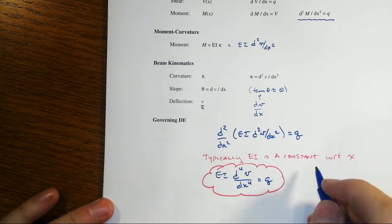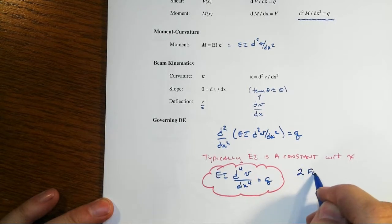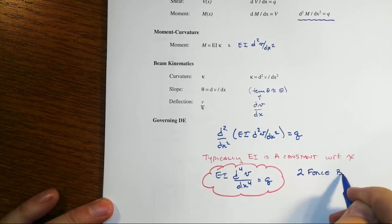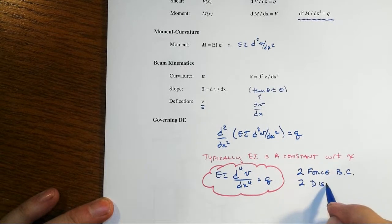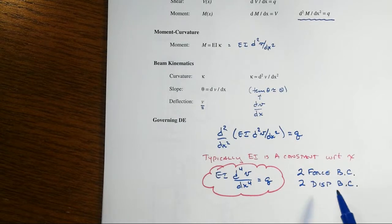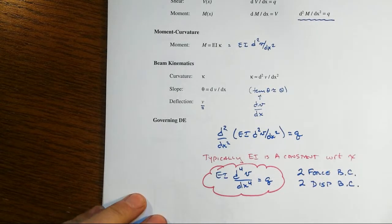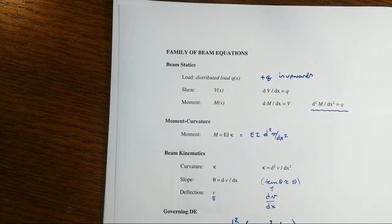So when we have this fourth order differential equation, the only way we can solve for that completely and uniquely for a given situation is to have two force-related boundary conditions and two displacement-related boundary conditions. Only for a total of four.